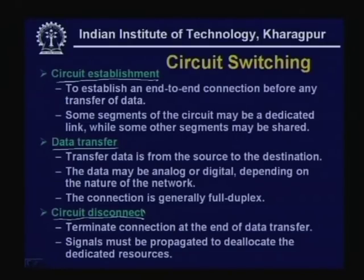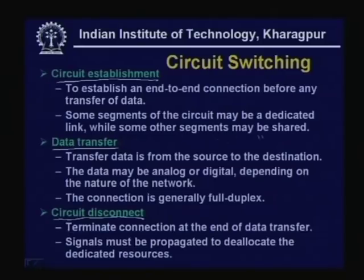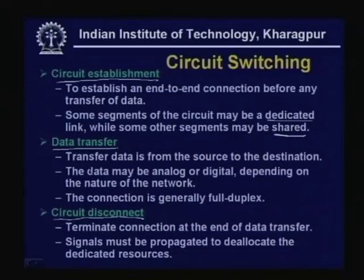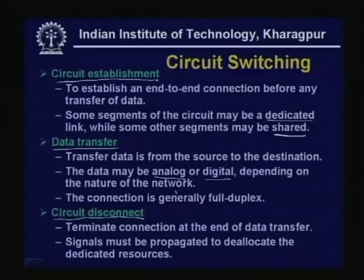In the circuit establishment phase, an end-to-end connection is established before any transfer of data. Some segments of the circuit may be dedicated links while others may be shared. In the data transfer phase, once the link is established, data is transferred from source to destination through the dedicated link. The data may be analog or digital in nature, and the connection is generally full duplex.